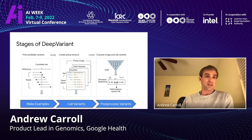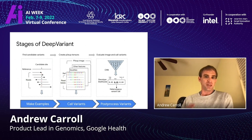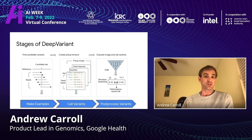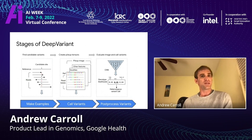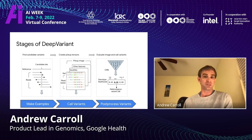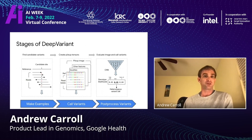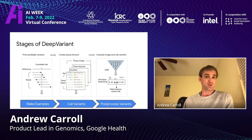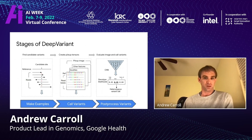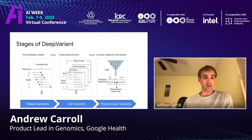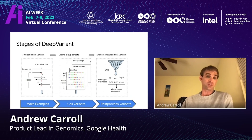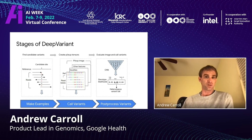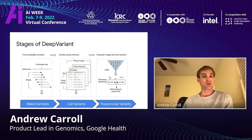DeepVariant has a number of stages. The first step is a human-written heuristic which identifies candidate positions — things which are plausibly variant. We need to do this because with 3 billion positions, computing across the entire genome is an intractably difficult problem. We can use simple heuristics to identify the positions to call, represent those as a set of input channels, and then pass that to the convolutional neural network to generate the output probabilities.